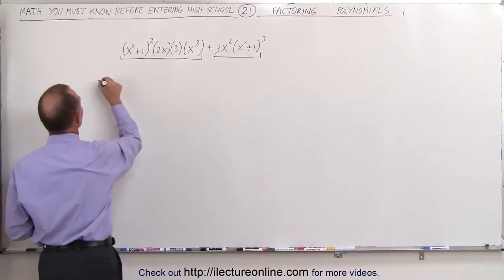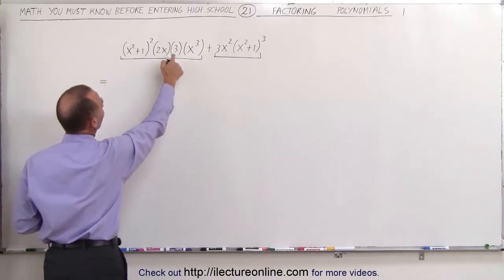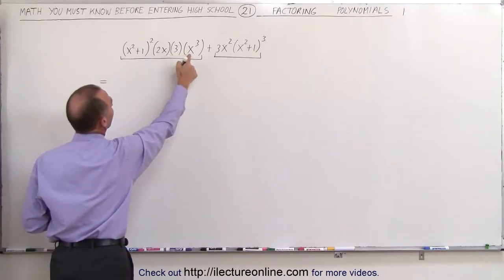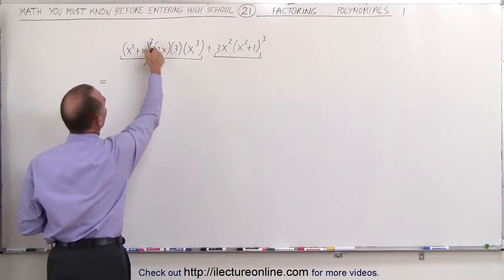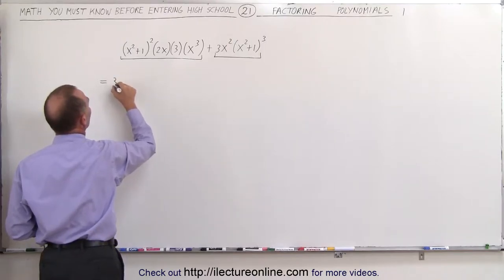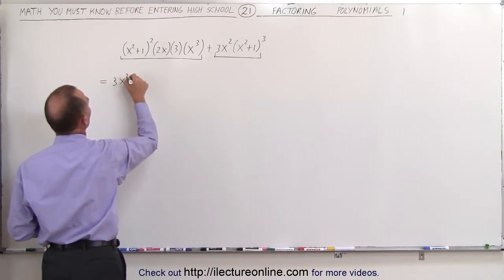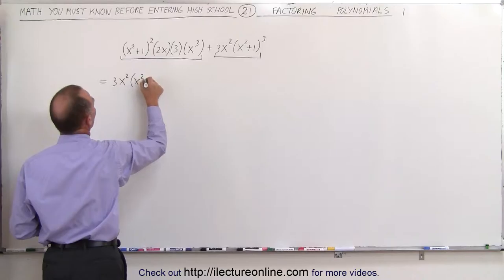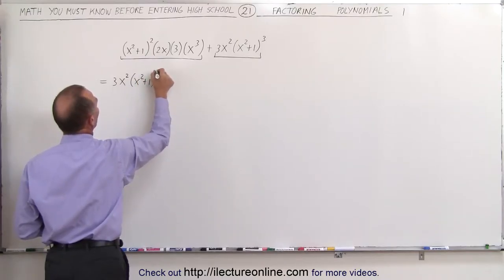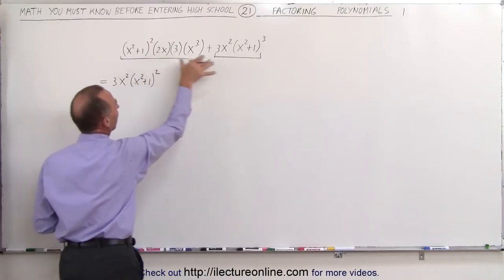Which means that this becomes—remember we're going to factor out a 3 and an x squared and x squared plus 1 quantity squared—so this becomes 3 times x squared times x squared plus 1 quantity squared. That's going to be factored out from here and here.